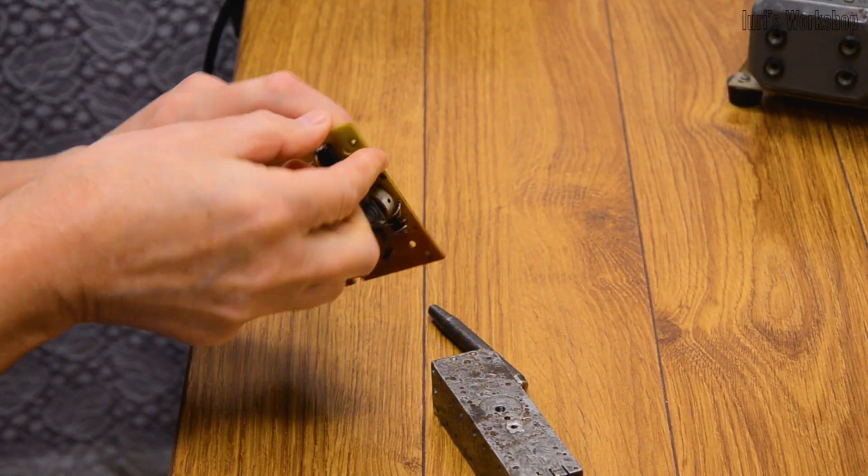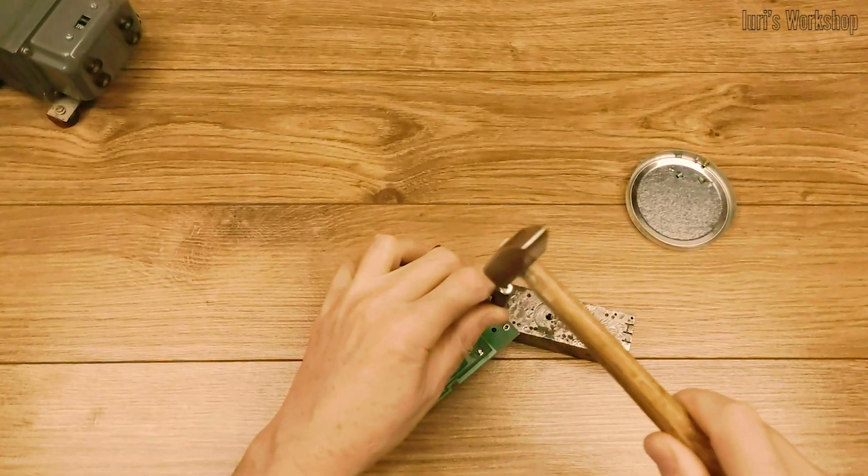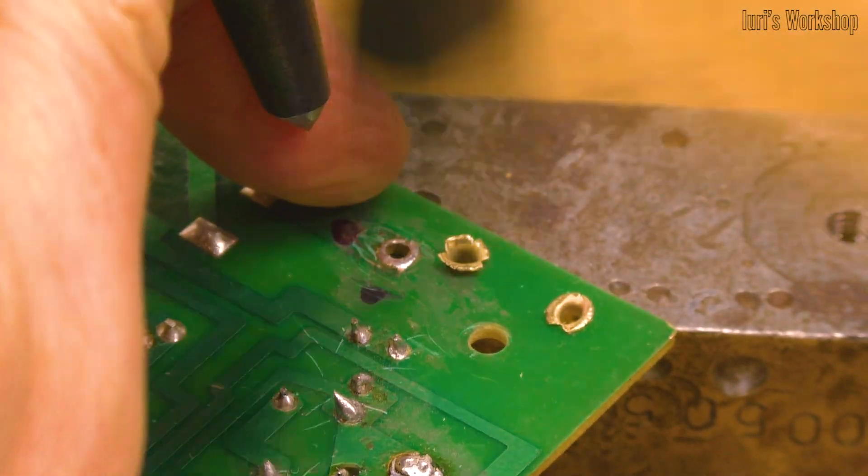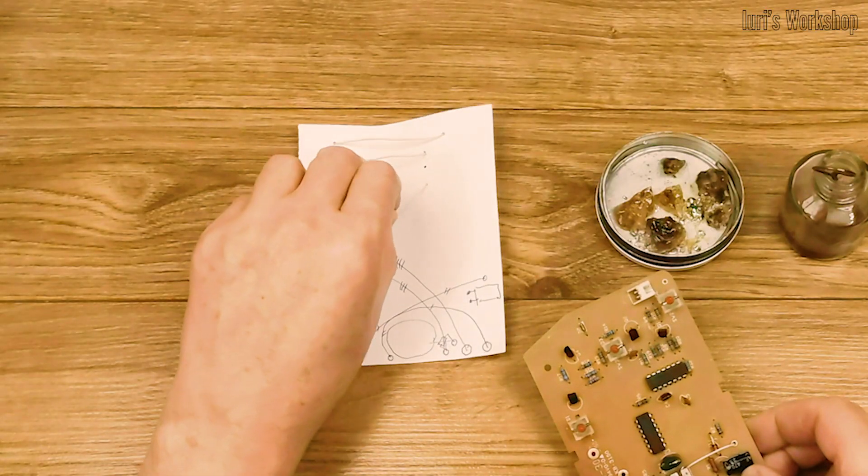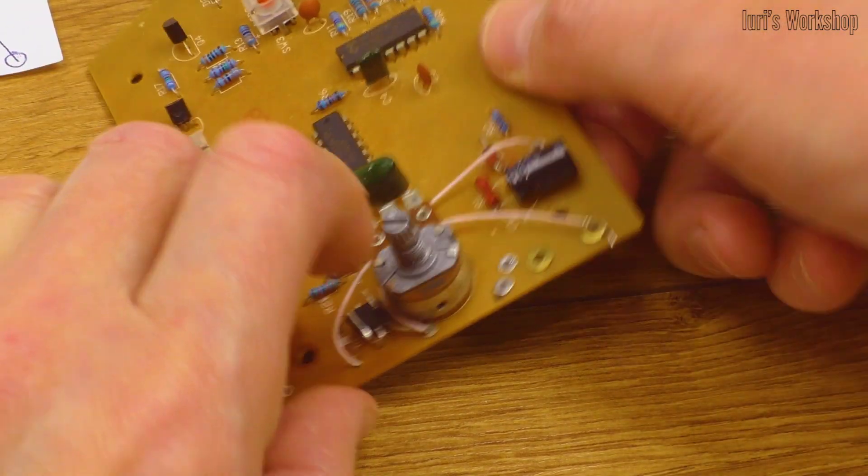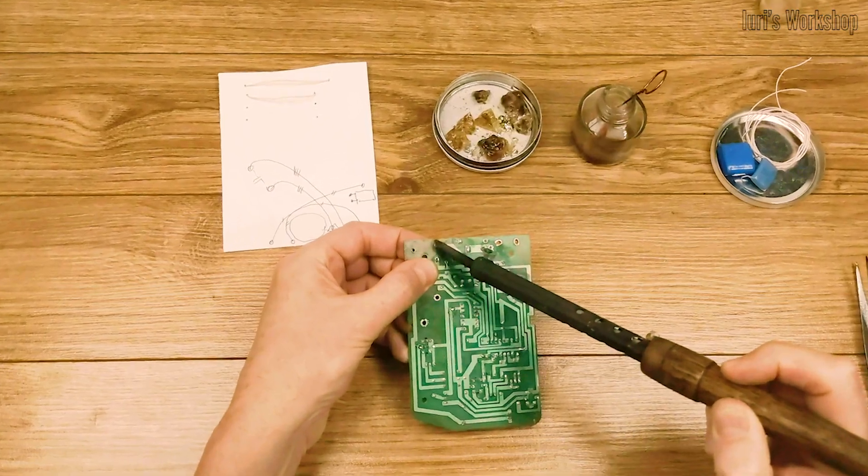I then made holes in the circuit board and pressed hollow rivets into them, so that I could securely fasten additional circuit elements. I connected these elements using PTFE insulated wire, as the temperature inside the toaster is quite high.